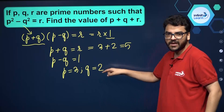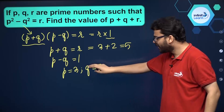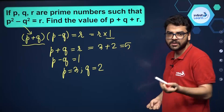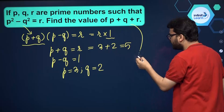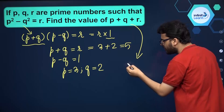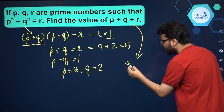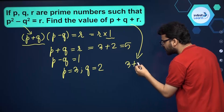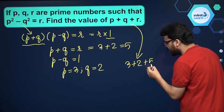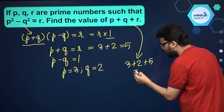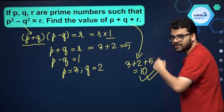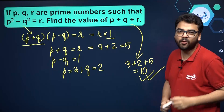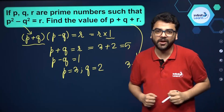So the values of p, q and r are 3, 2 and 5. We can easily find the value of p plus q plus r — that will be equal to 3 plus 2 plus 5, which is equal to 10. That is the answer to this question. I hope this is clear to every student watching this video.